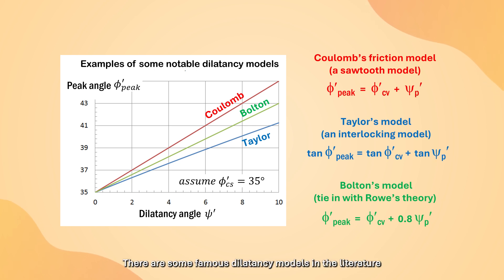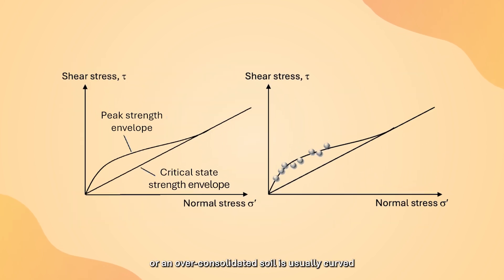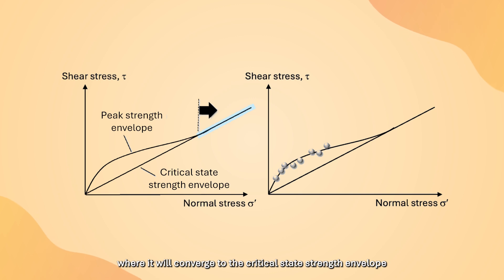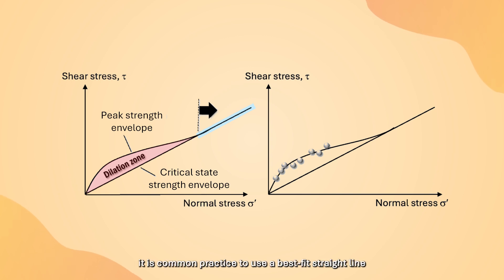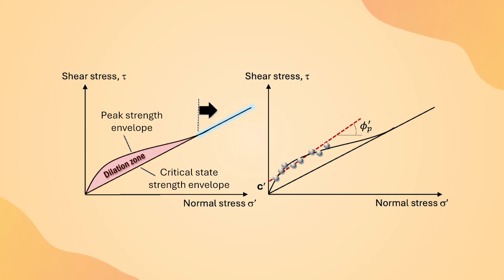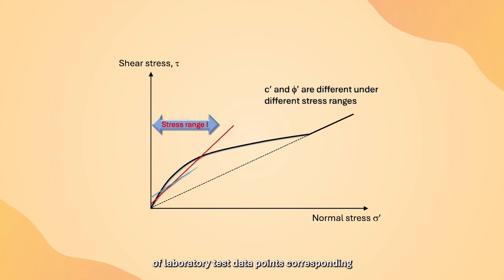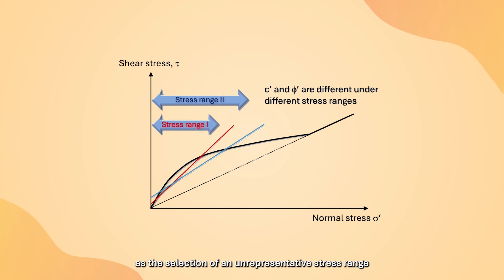There are some famous dilatancy models in the literature, for example Coulomb's sawtooth friction model, Taylor's interlocking model, and Bolton's model. The peak strength envelope for a dense or overconsolidated soil is usually curved because of soil dilation, except under large normal stresses where it converges to the critical state strength envelope. In Hong Kong, it is common practice to use a best-fit straight line to obtain the apparent cohesion and angle of shear resistance in terms of effective stress. The designer should be cautious in selecting laboratory test data points corresponding to the project's relevant stress range, as an unrepresentative stress range could result in unrealistic estimation of shear strength parameters.